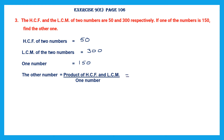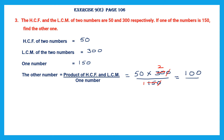So the product of HCF and LCM: HCF is 50, multiplied by LCM which is 300, divided by the one number given, 150. Let's cancel the zeros. We can also cancel 15 and 30 — 15 ones are 15, 15 twos are 30. Now multiply the numerators: 50 into 2 is 100, divided by 1, which is 100. The other number is 100.